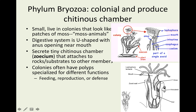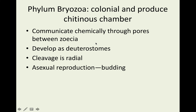Bryozoa are colonial animals that produce a chitinous chamber. They live in small colonies and look like moss animals. If you remember from plants, bryophytes means moss, so bryozoa means moss animals — zoa being animals. The digestive system is U-shaped, with the anus opening near the mouth. You need to know that bryozoa are colonial. They communicate through their pores and develop as deuterostomes. Cleavage is radial, and they reproduce asexually through budding.